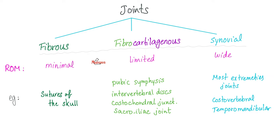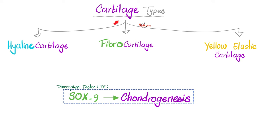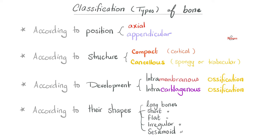How many types of joints do we have? Three. How many types of cartilage do we have? Three.